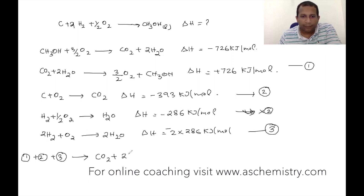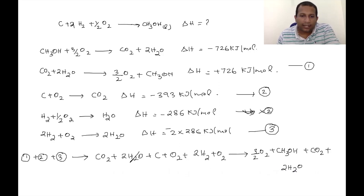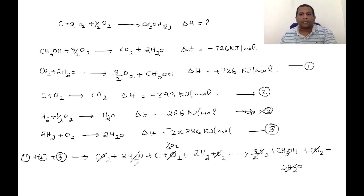We add Equations 1, 2, and 3. In Equation 3, 2H2 is on the left with 1 oxygen. On the right side of Equation 1: 3/2 O2 and CH3OH. Equation 2 gives CO2 on both sides — these cancel. Equation 3 gives 2H2O. After cancellation: 1 carbon, 2H2, and ½O2 remain, giving us the required equation: C + 2H2 + ½O2 → CH3OH.